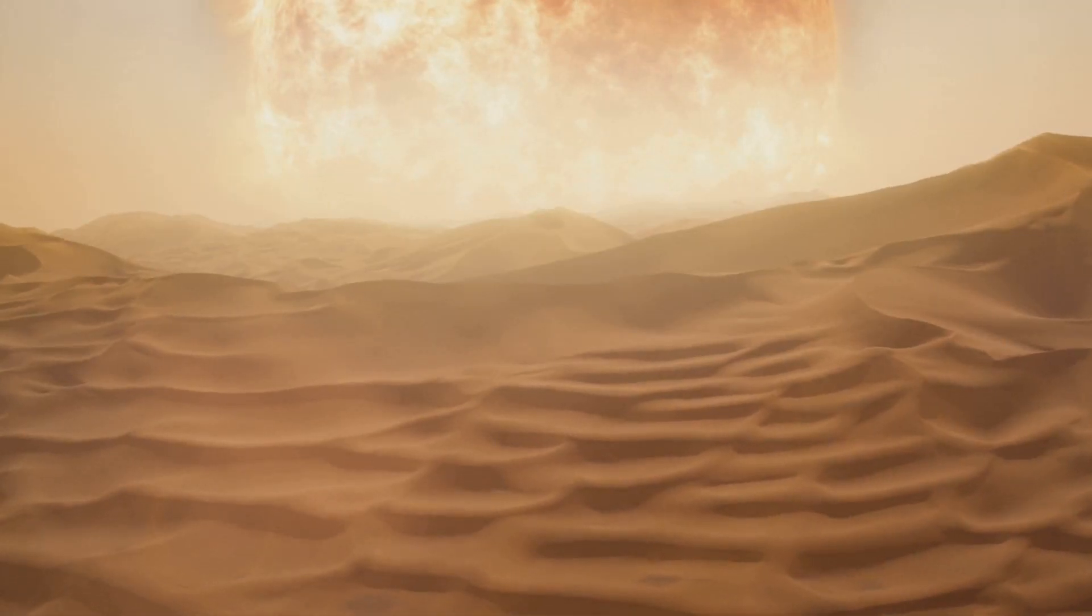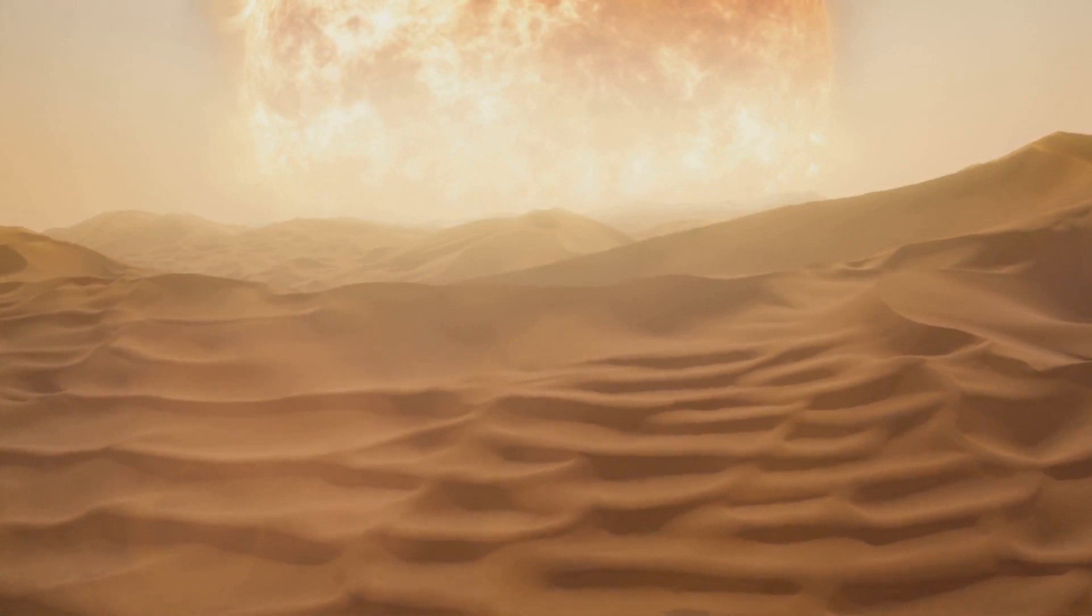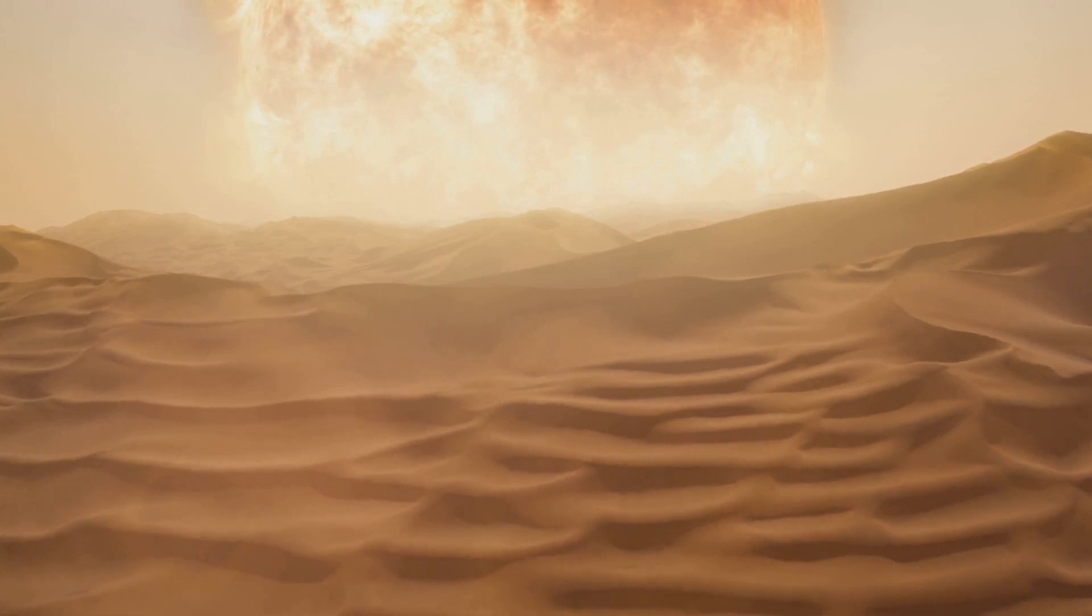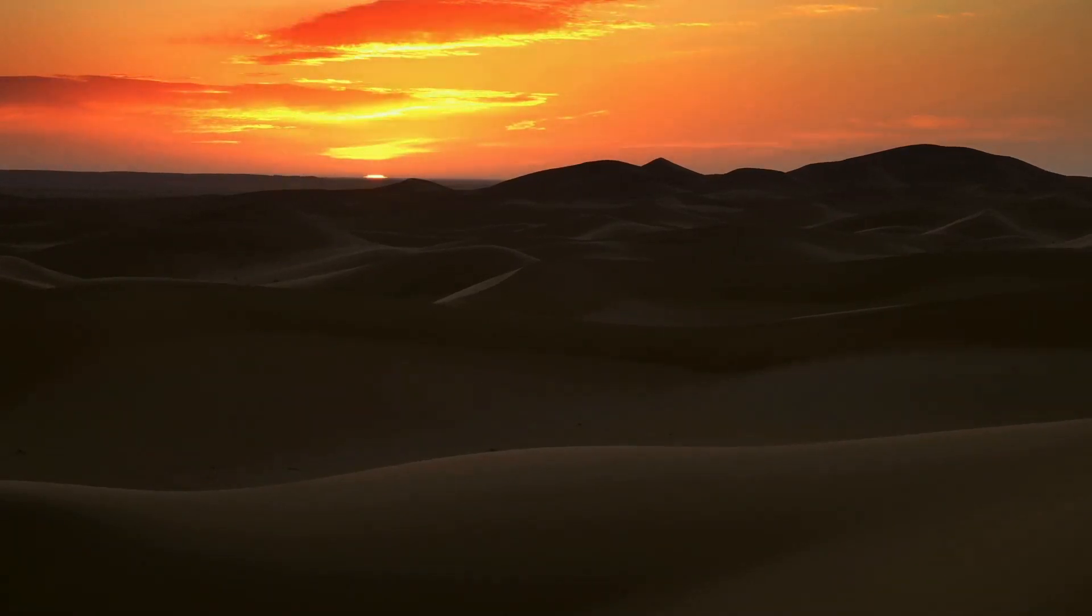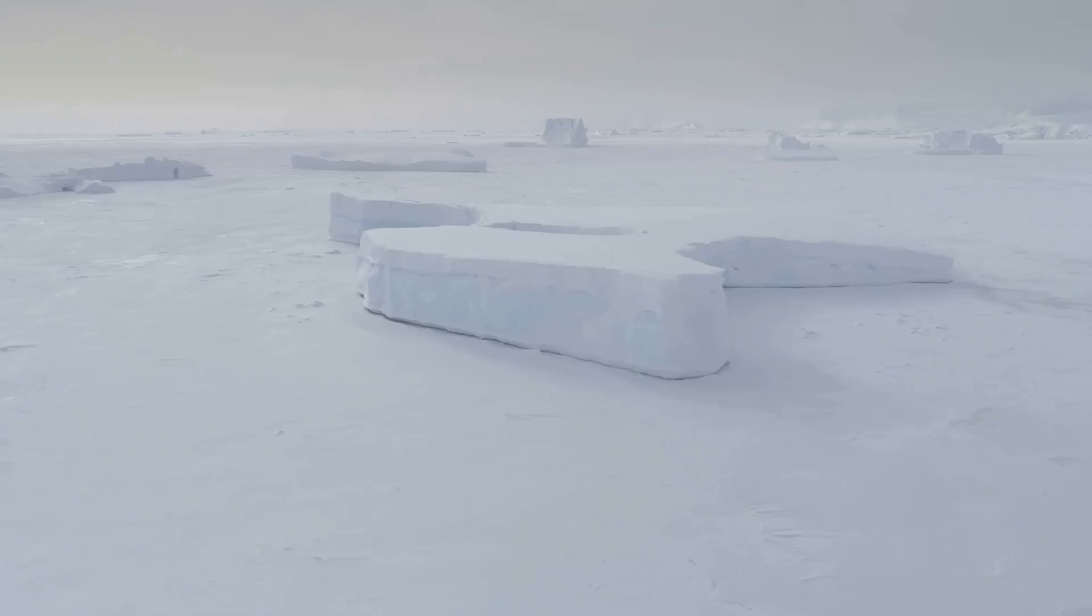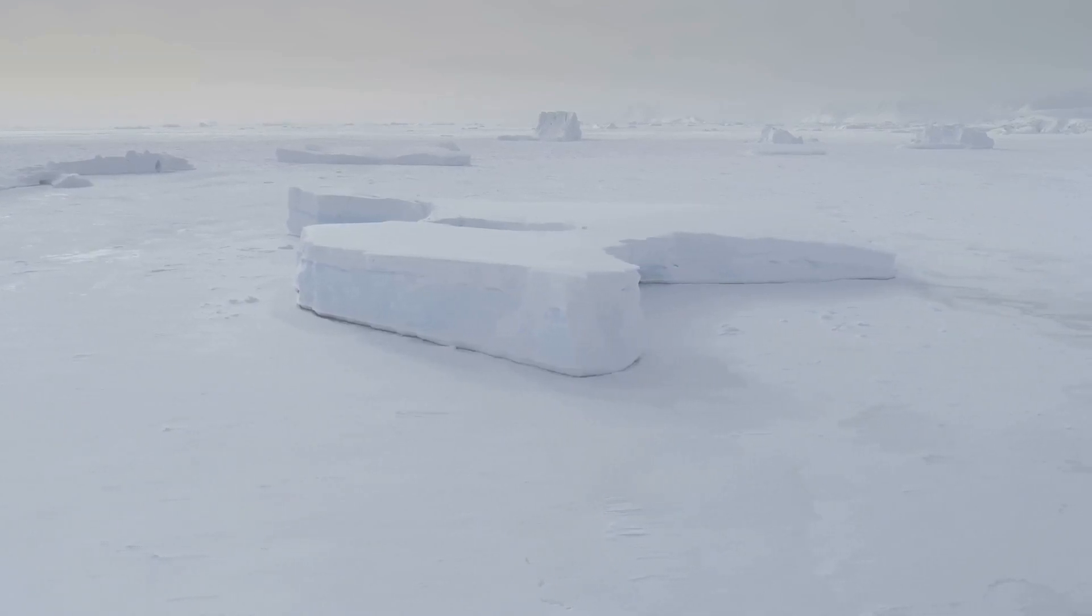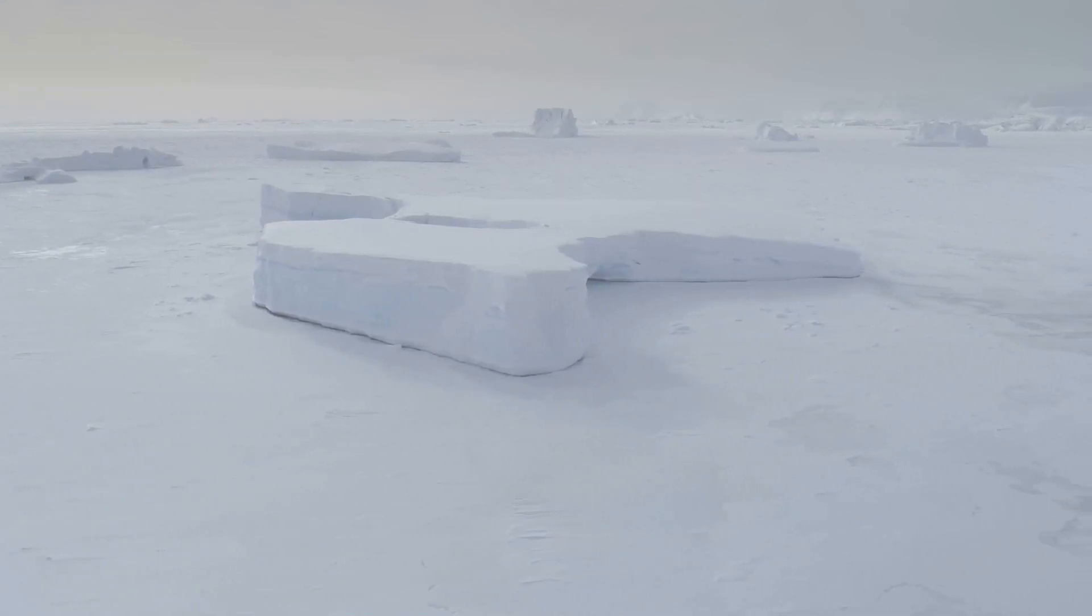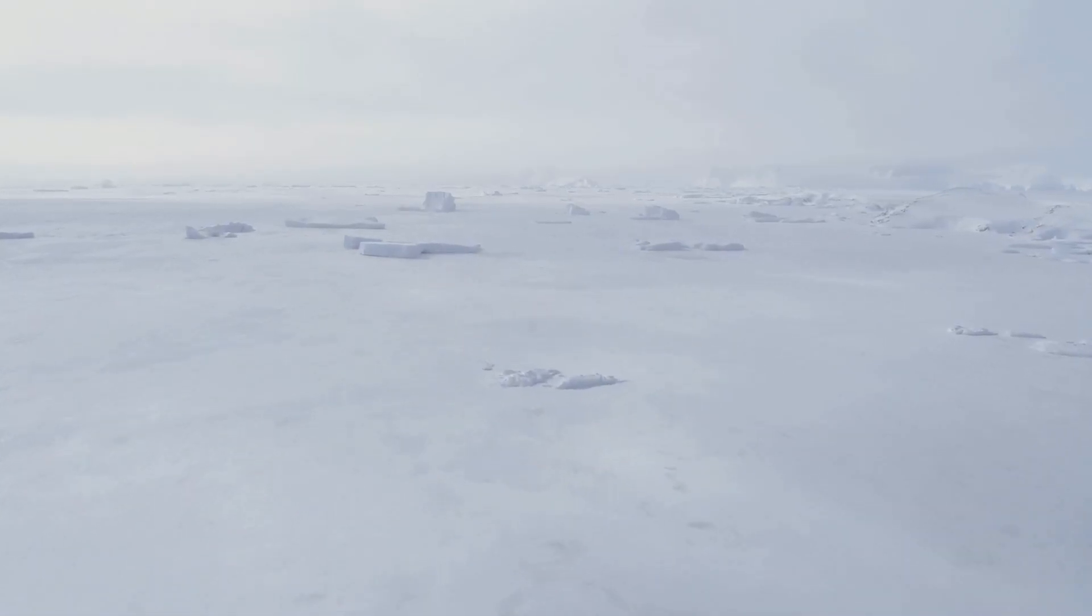On the sun-facing side, temperatures would skyrocket. Areas that were once teeming with life would quickly turn into uninhabitable deserts. Water bodies would evaporate, leaving behind vast expanses of parched land. The relentless heat would make survival nearly impossible. It would be a world on fire, a stark contrast to the icy darkness of the other half. The half of earth trapped in eternal darkness would become a frozen wasteland. Without the sun's warmth, temperatures would plummet far below freezing. Oceans would turn into vast sheets of ice, and snow would cover the once vibrant landscapes. The chilling cold would make this side of the earth as inhospitable as the scorching half.